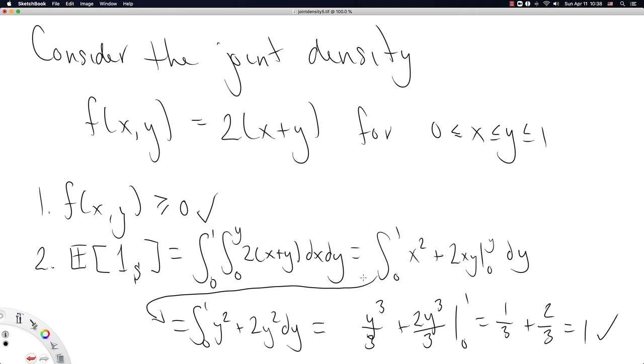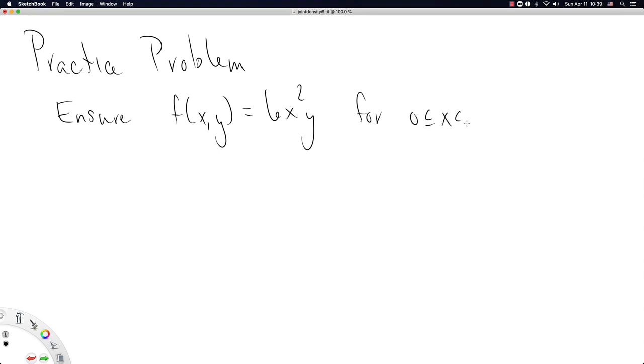I'm going to leave you with a similar practice problem to this, though I'm going to ensure that the bounds, the sample space, is a little bit easier to deal with than the one we just did. So here is your practice problem. Ensure f of x, y equal to 6x squared times y for 0 less than x less than 1 and 0 less than y less than 1 is a density function.